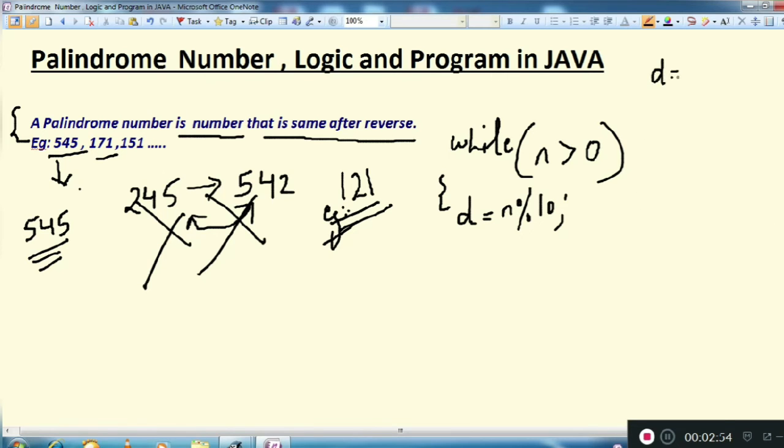n modulus 10 and n is your 121, so d is having first time 1, because n modulus 10 will give you 1. And here reverse equals to reverse multiply 10 plus d. So first time reverse variable is zero, 0 multiplied 10 plus 1. In reverse you will be having 0 plus 1 is 1. And after that, n equals to n divide by 10.